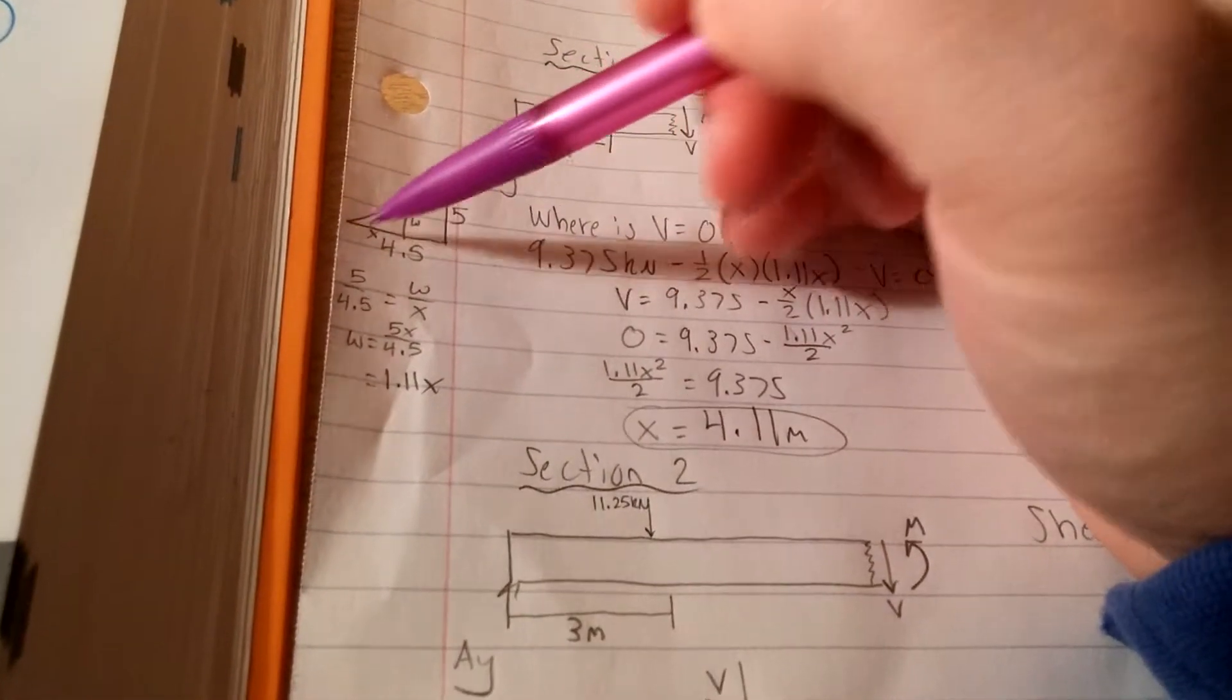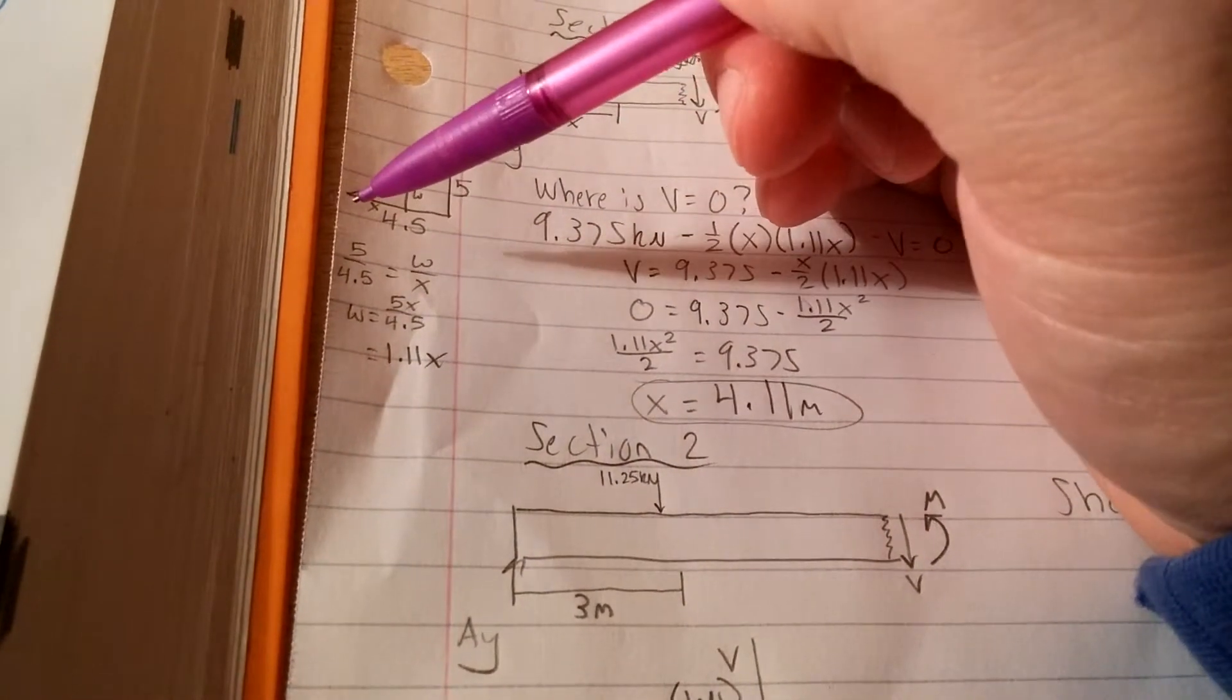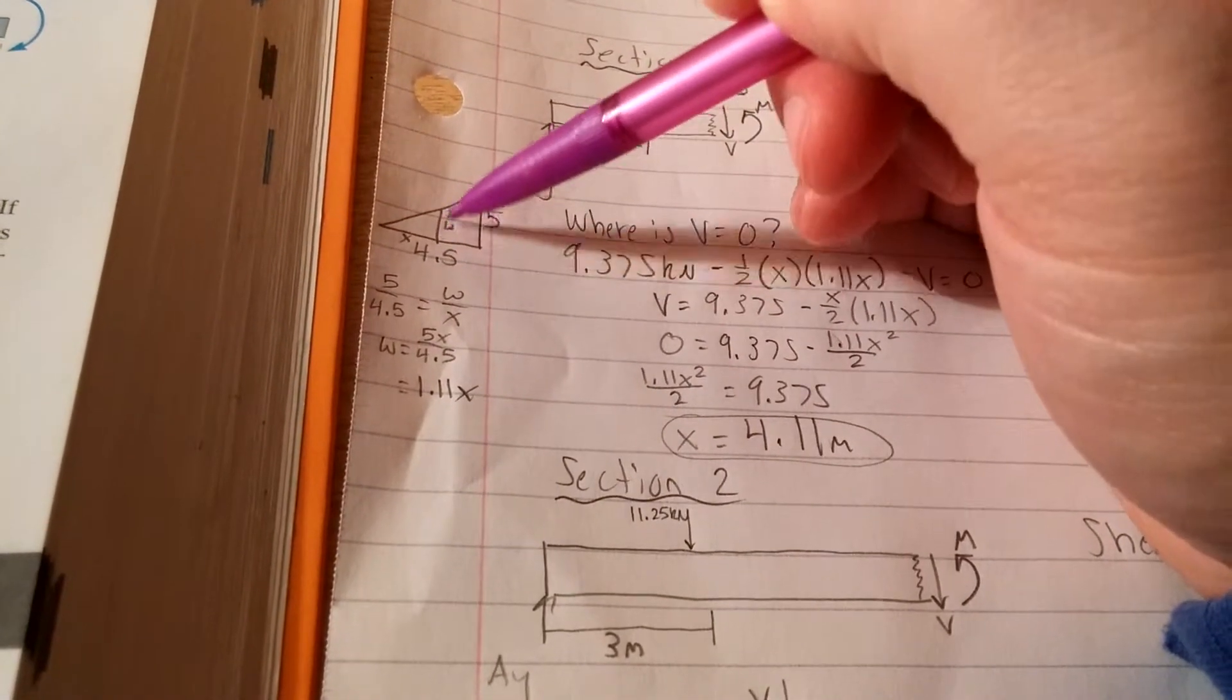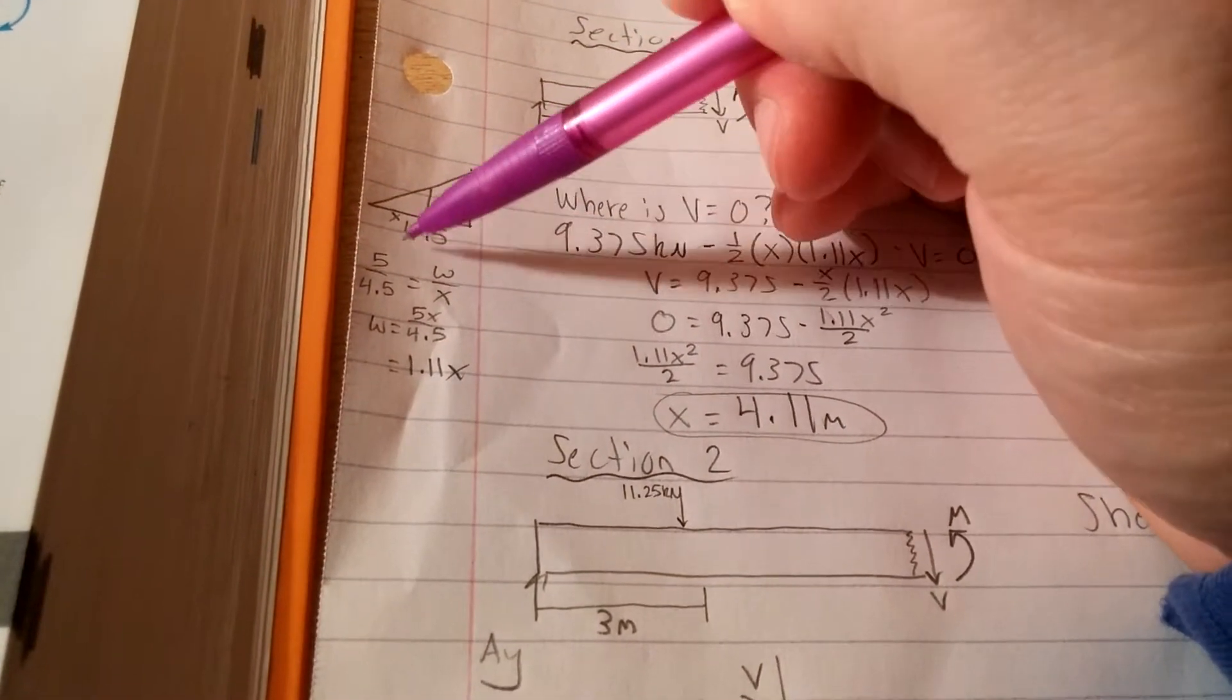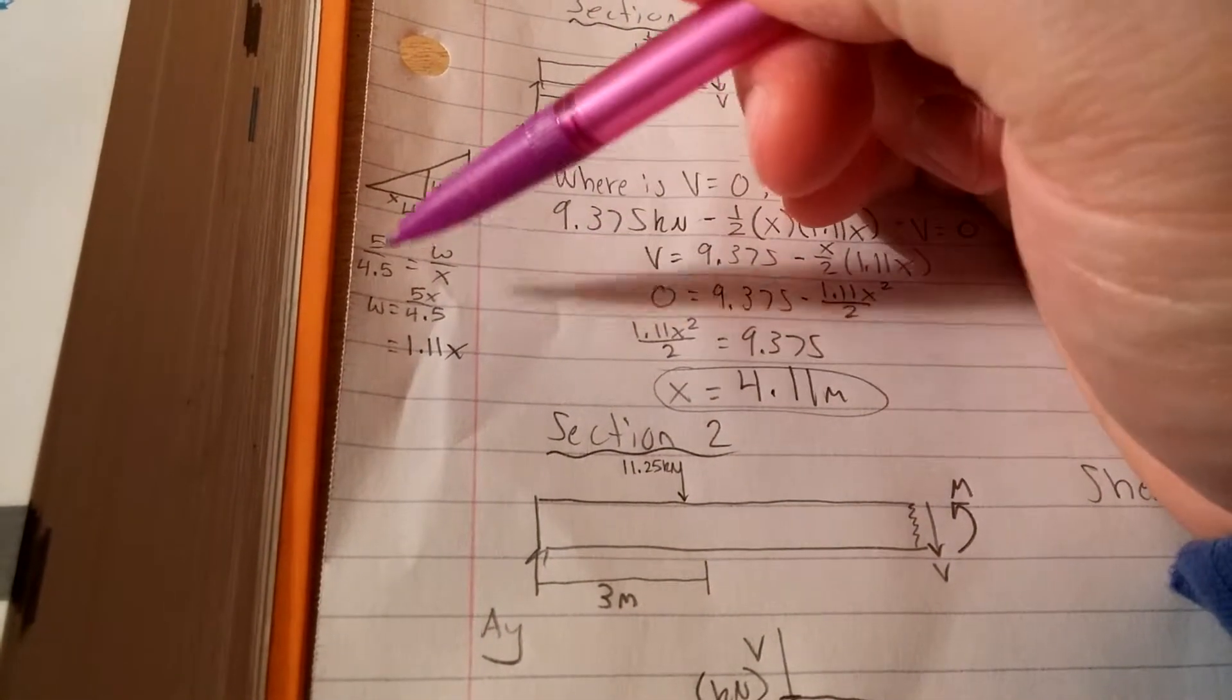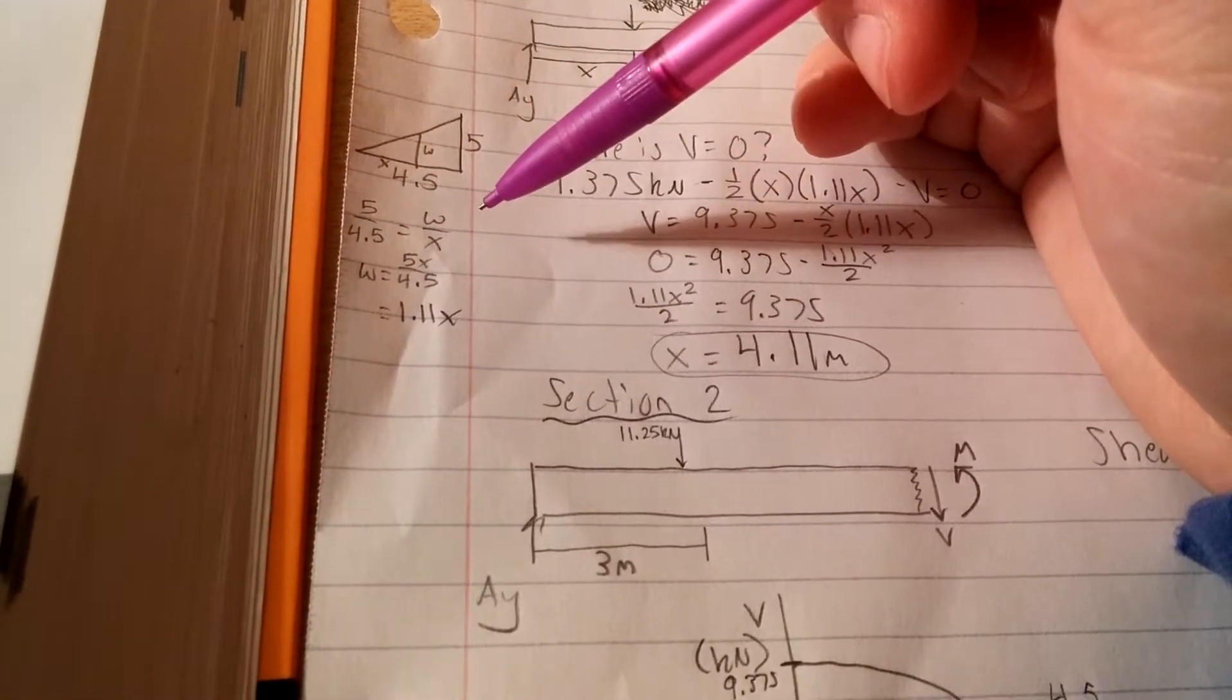Imagine this is one of the intensities. So we have the top is 5, goes 4.5 in the X. Wherever the shear is zero, we're going to have a smaller triangle. So X is to 4.5 as W is to 5.